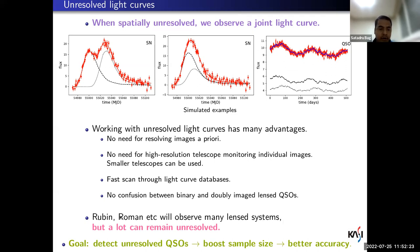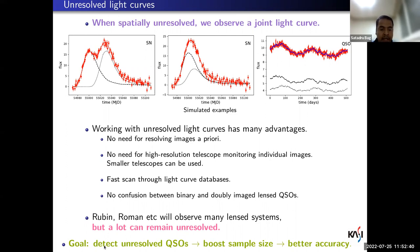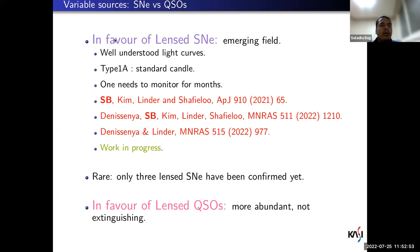The ongoing ZTF and mainly the upcoming Rubin and Roman will observe many lens systems. Rubin alone will see hundreds of lens supernovae and maybe thousands of lens quasars. The catch is that a lot can remain unresolved. The main goal is to detect these unresolved systems, which will boost the sample size and in turn ensure better accuracy in this cosmological problem.